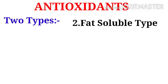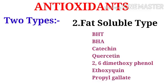Second type: fat-soluble type. Examples: BHT (butylated hydroxy toluene), BHA (butylated hydroxy anisole), catechin, quercetin, 2,6-dimethoxyphenol, etoxiquin, and propyl gallate. Catechin is a natural phenol and antioxidant. Etoxiquin is a quinoline-based antioxidant used as a food preservative in certain countries.